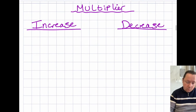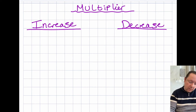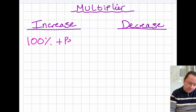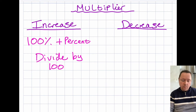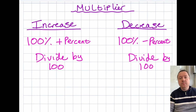So what we're doing here is changing a percentage change problem into a problem where we multiply by a decimal. Here's how we always do it — to find the multiplier, we always start with 100%. If we're doing an increase, we add the percentage, then divide by 100 to change it into a decimal. If it's a decrease — like a sale — we start with 100% and take away the percentage, then also divide by 100 to change it into a decimal.